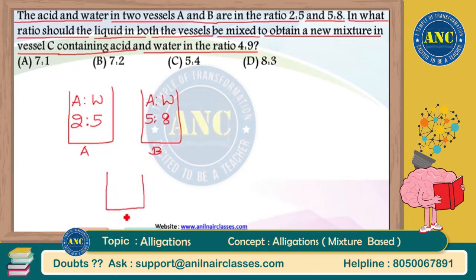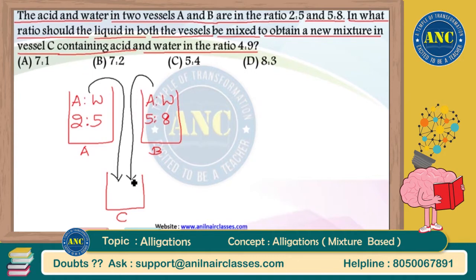There is another vessel named vessel C. You need to take liquid from both vessels A and B, mix them, and obtain the result in vessel C. When you take some liquid from vessel A and vessel B, the acid and water in vessel C will be in the ratio 4:9. In what ratio should you pick up the liquids from A and B and mix them? That is the question.